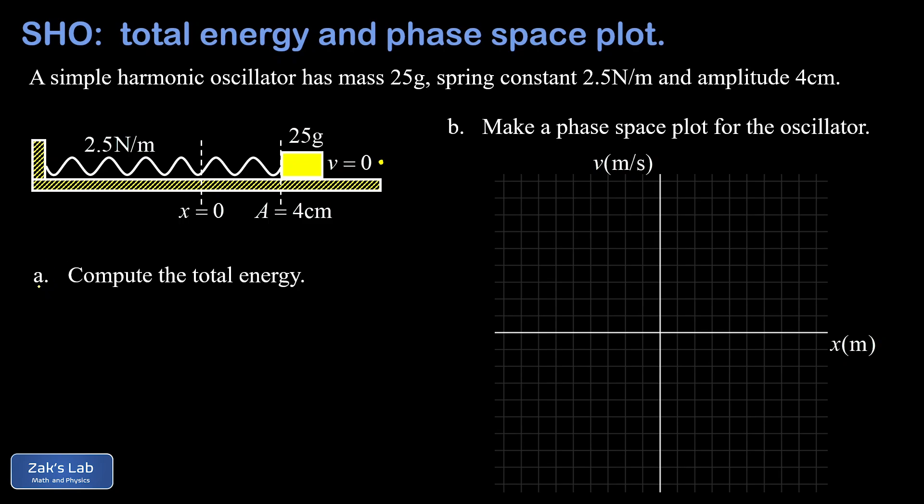We're asked in part a to actually find the total energy of this oscillator because that's going to be useful in constructing the phase space plot. What we're going to do is just look at the moment in time shown in the diagram at that turning point, because all the energy is spring potential energy there and it should be quick to find the total energy. The total energy is going to be one half times k times a squared.